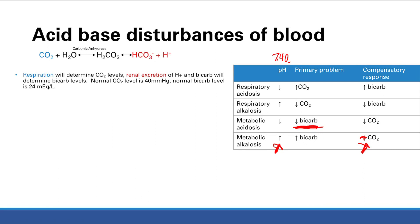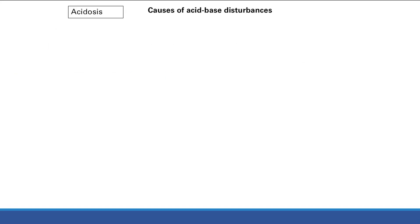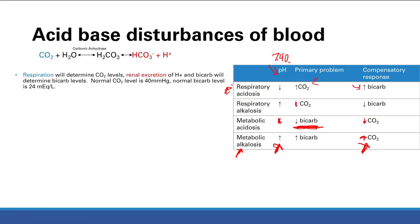If pH is increased and CO2 is also increased — same direction — this is a metabolic alkalosis. Same idea: if pH is down and CO2 is also down, that's metabolic acidosis. Because in the problems, you're going to see pH, bicarb, and CO2. If your pH and your CO2 go in opposite directions, then you know it's a respiratory problem. Same direction means metabolic; opposite direction means respiratory.